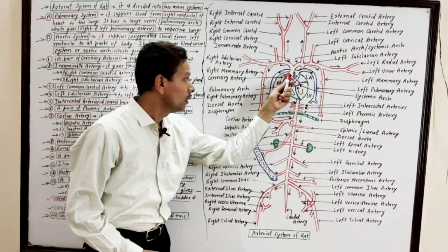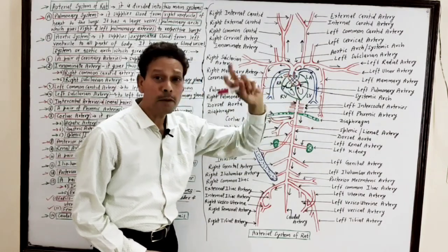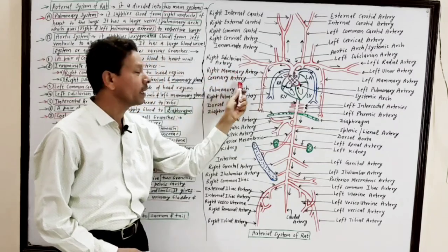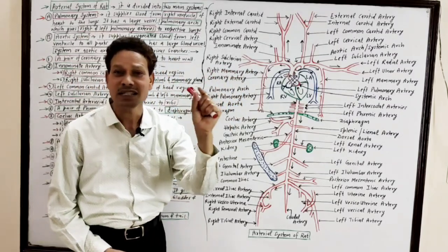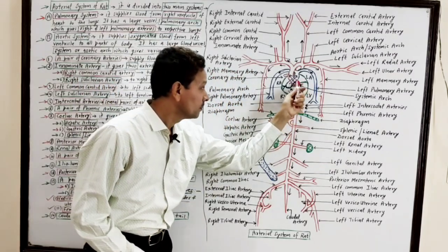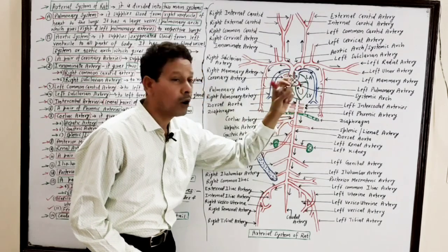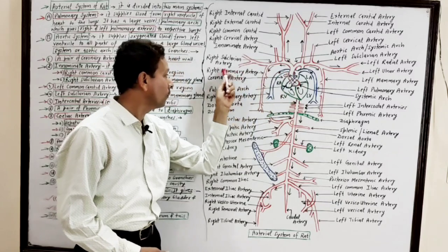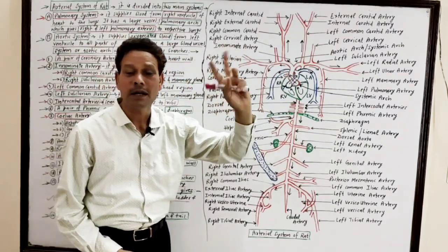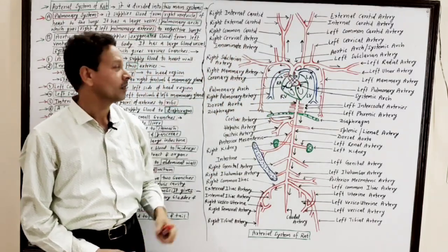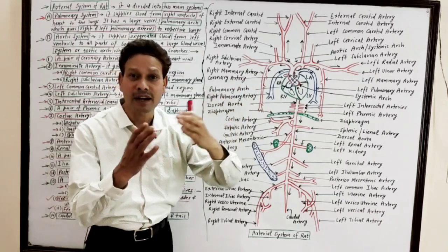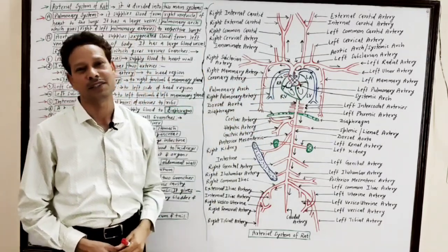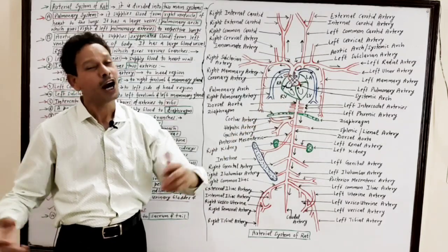First of all, from the basal part of the heart, the aortic arc gives a pair of coronary arteries — right and left coronary arteries — which carry oxygenated blood to the heart wall.